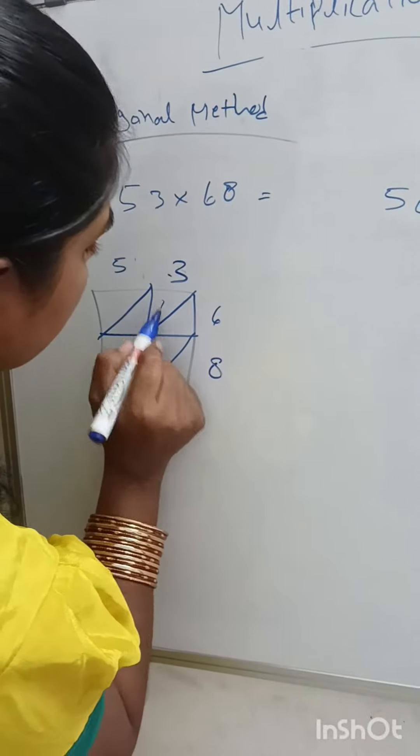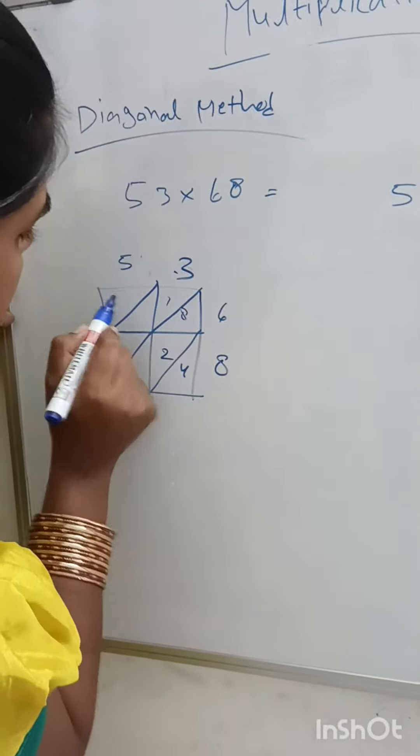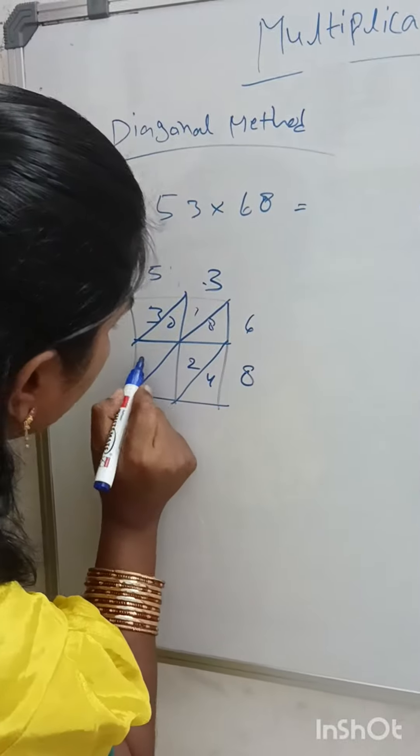3, 6 are 18. 3, 8 are 24. 5, 6 are 30. 5, 8 are 40.